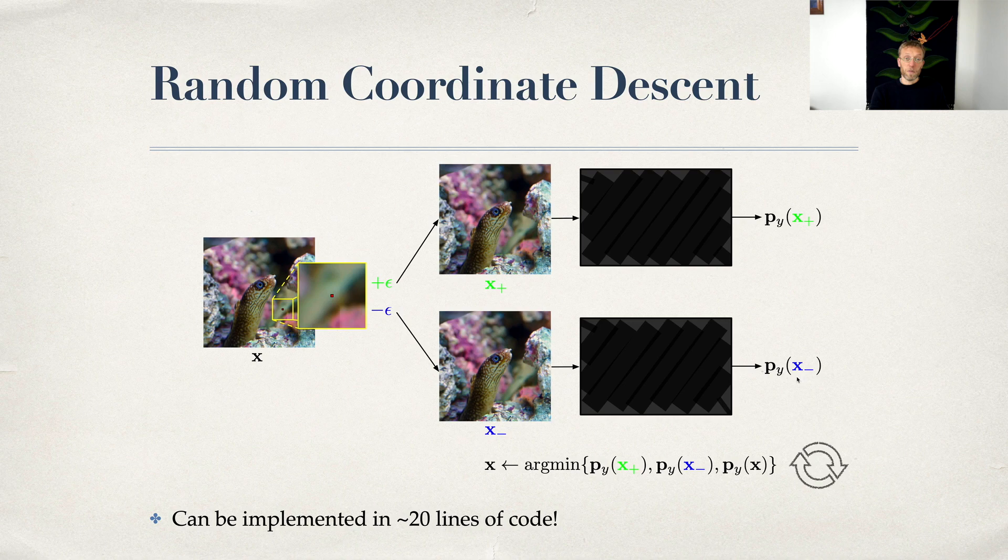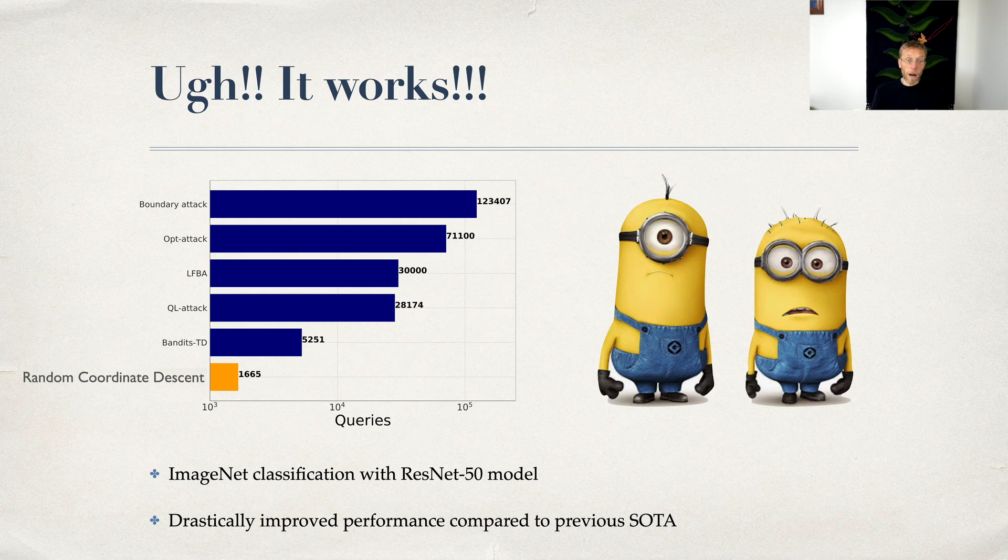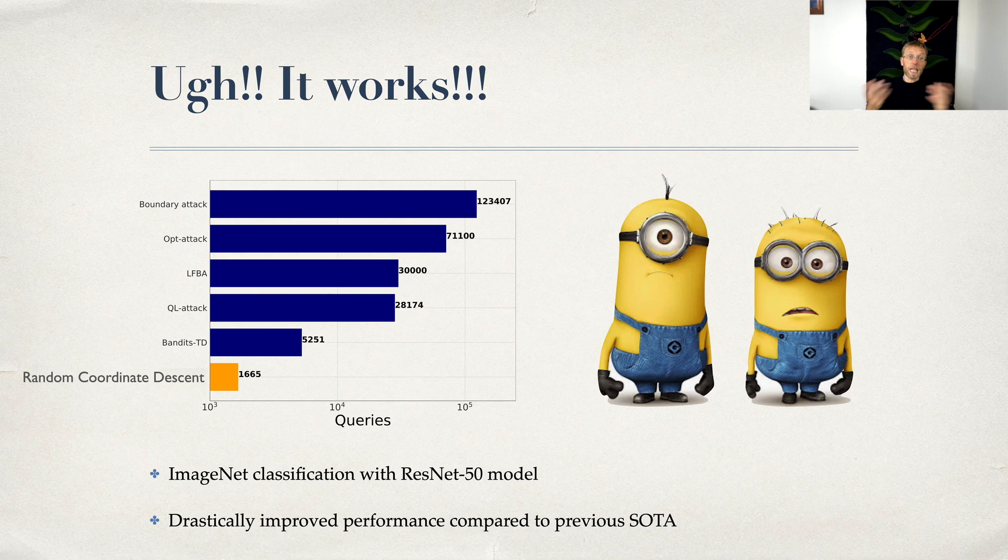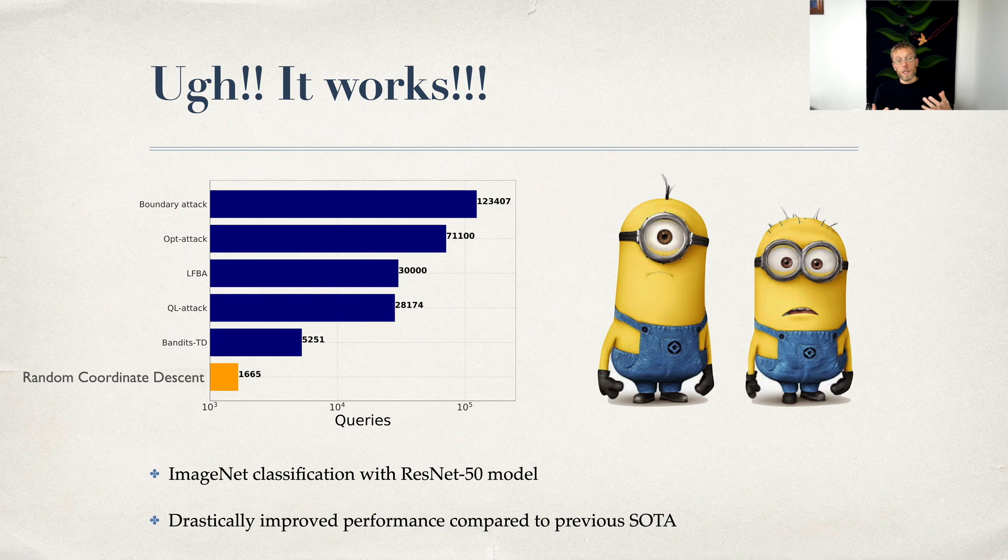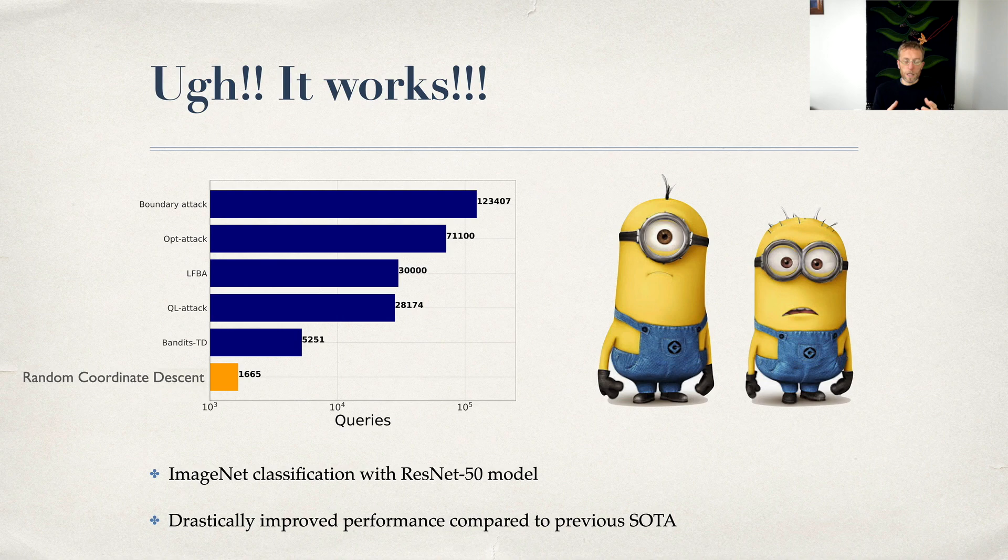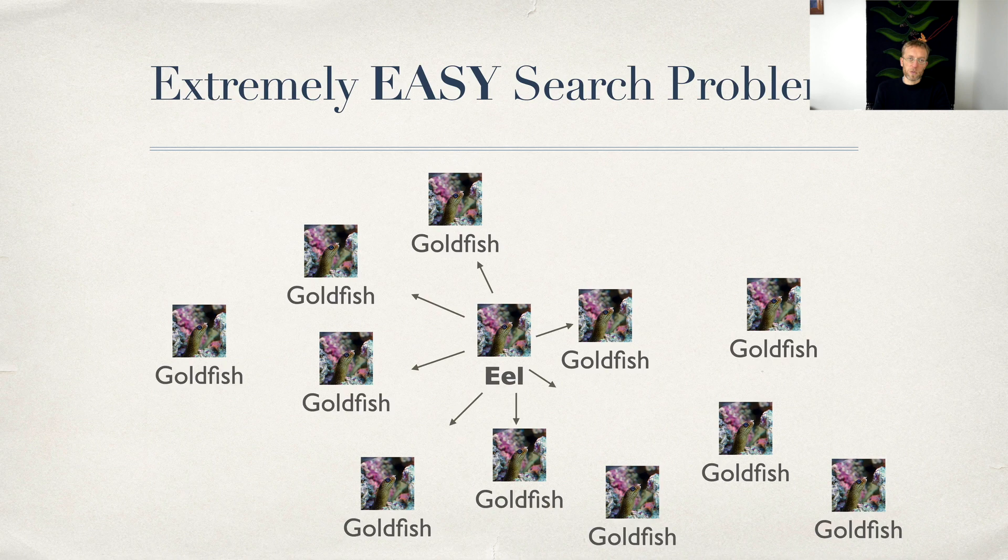My students came to my office and said it works. In fact, it worked much better than the Bayesian optimization approach and anything else. Now we had a dilemma: an algorithm so trivial we can't write anything about it. There's no interesting math, the algorithm is just five lines. But the more we thought about it, what's interesting is what we understood about the problem, that it's really, really easy.